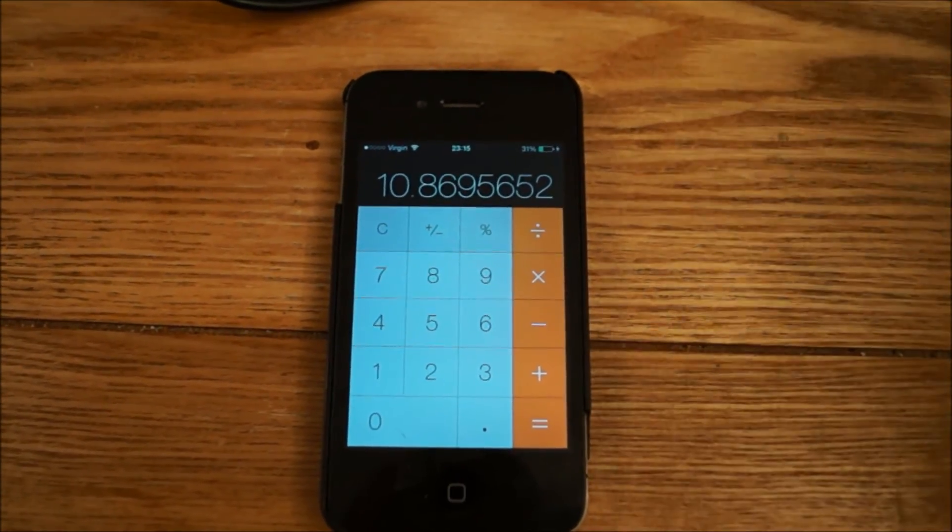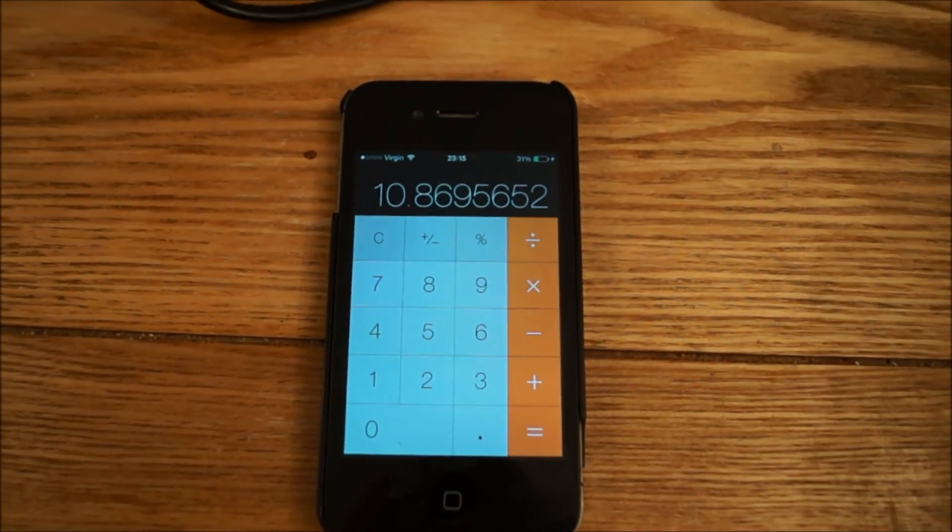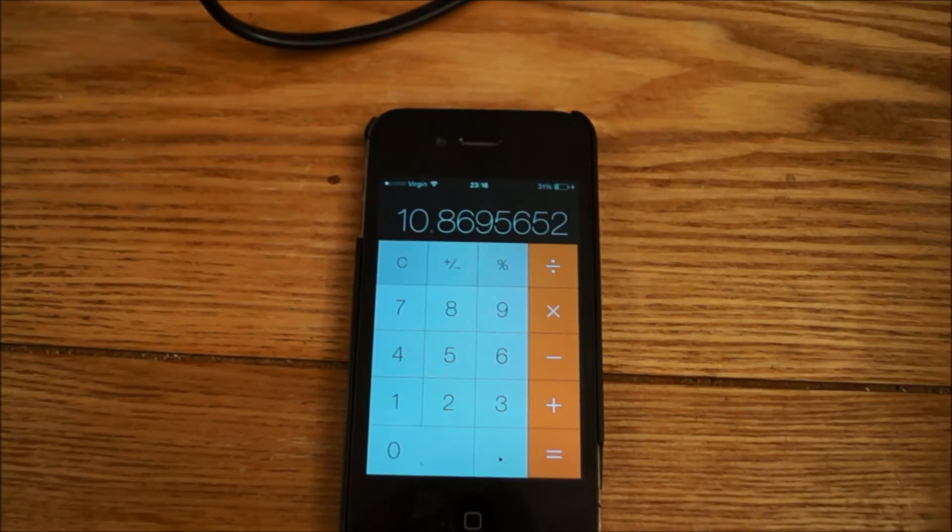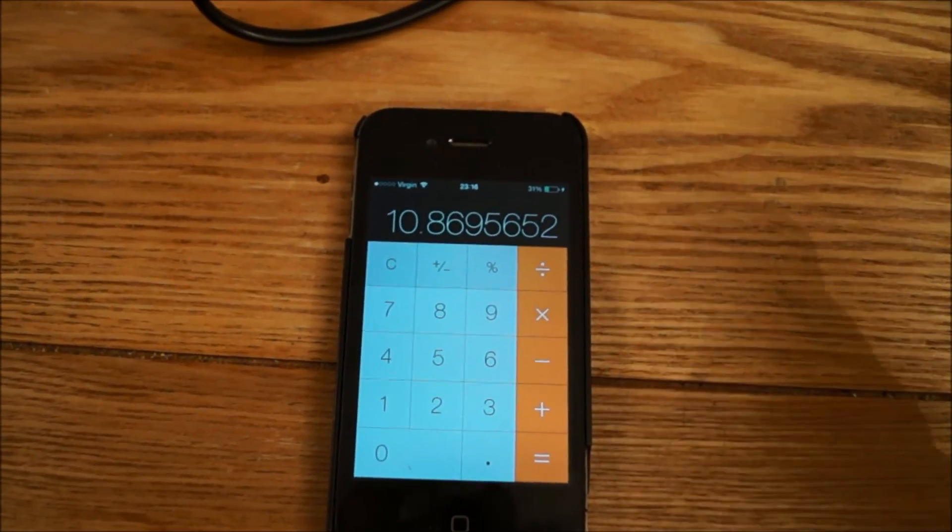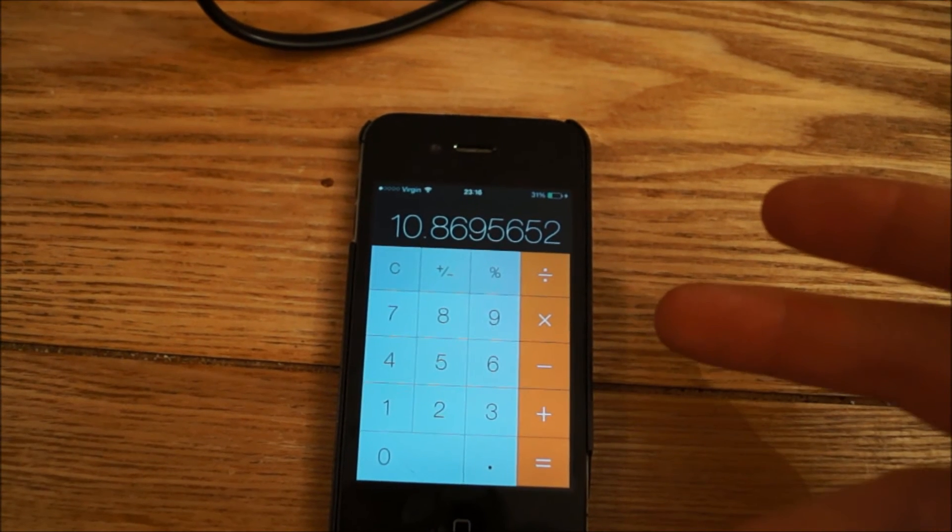So we've got 10.86 hours that this television can run off this battery. Due to efficiency, the inverter maximum efficiency can run at about 85% because of heat loss and running auxiliary systems. So 85% of this figure, you're going to be looking just above 9.5 hours. Yeah, 9.5 hours, 9 hours that you can run this television for off this single battery.